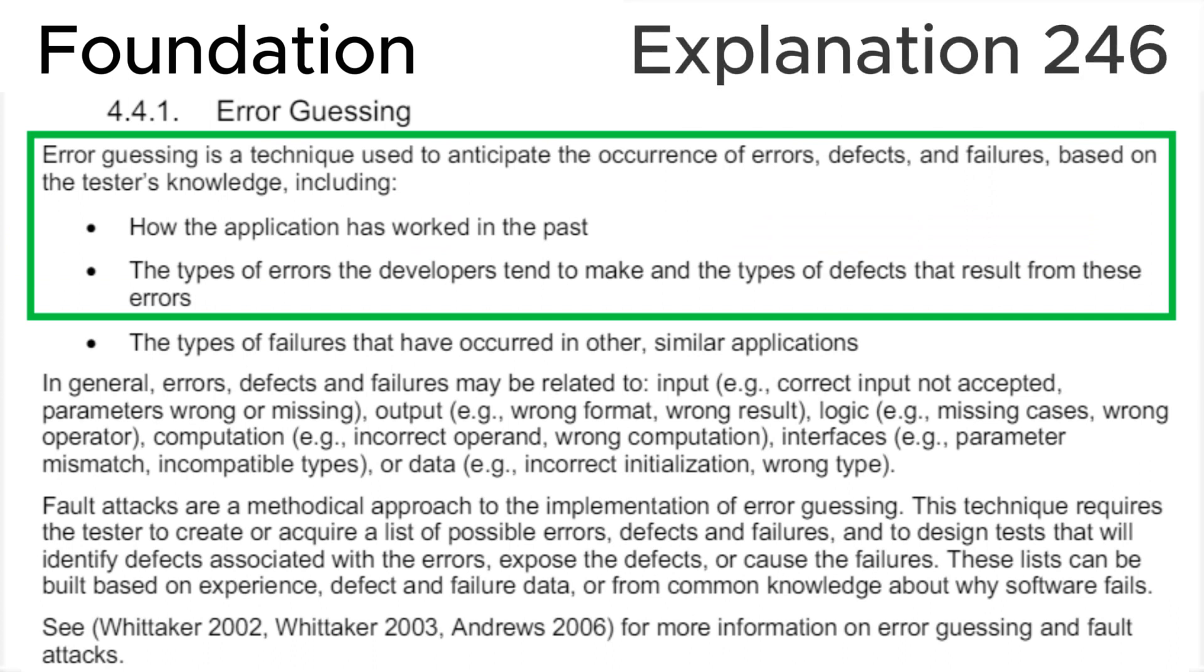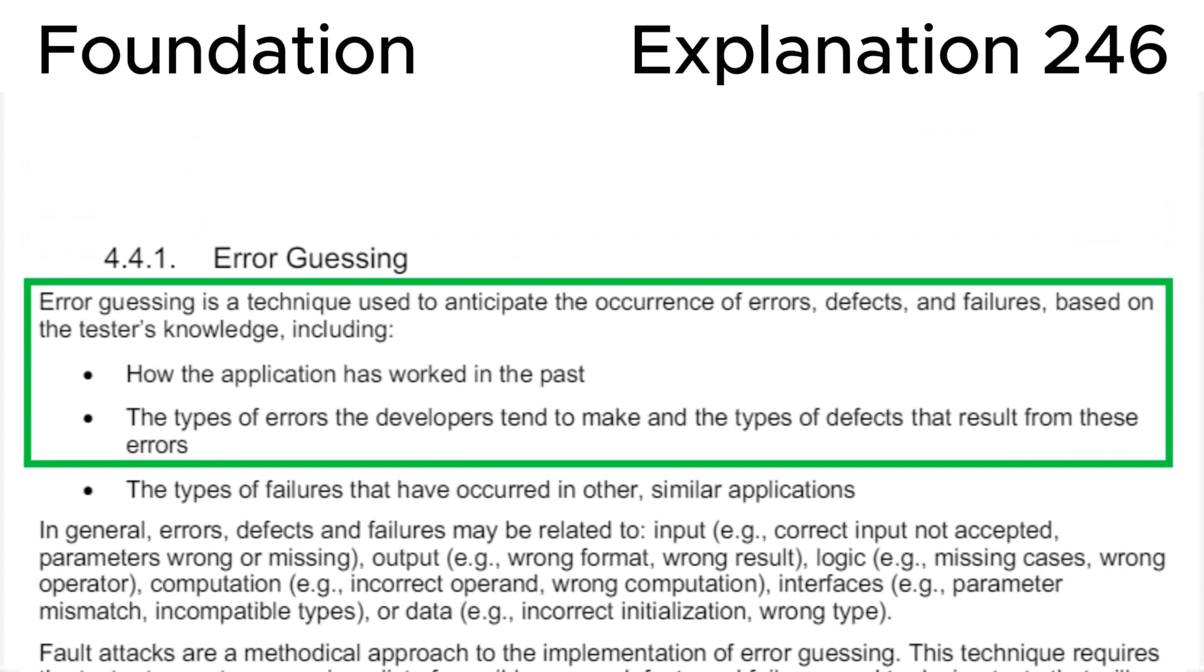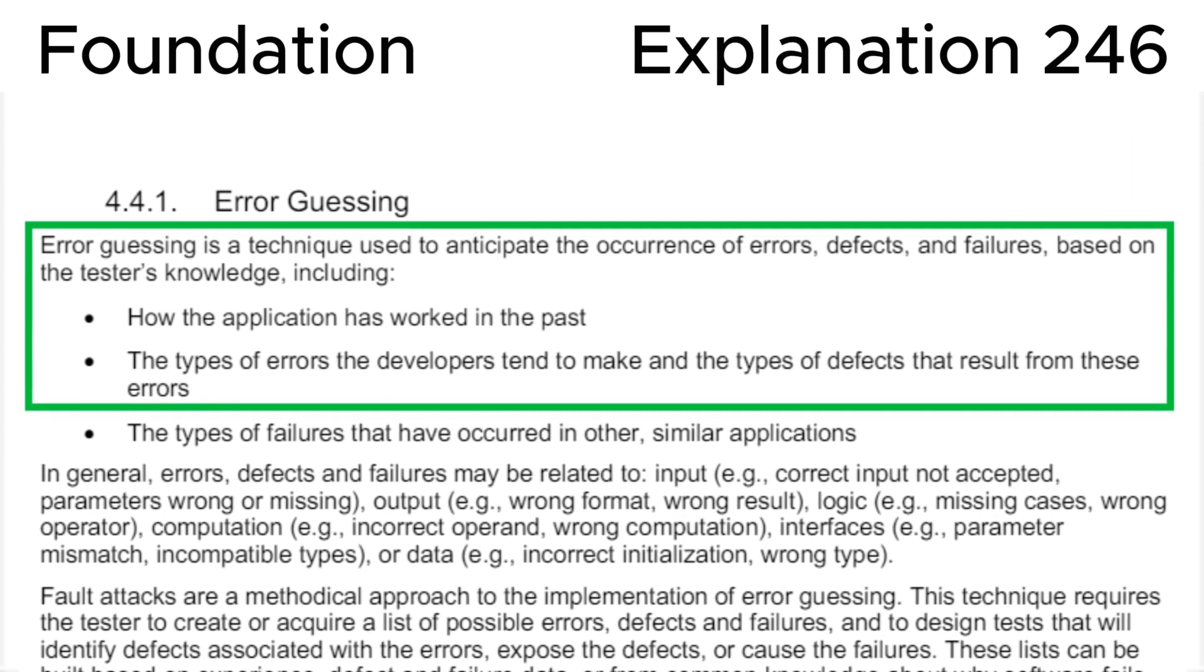Finally, let's look at section 4.4.1 Error Guessing in the ISTQB syllabus, where we can see that error guessing is a technique used to anticipate the occurrence of errors, defects, and failures based on the tester's knowledge, including how the application has worked in the past, the types of errors the developers tend to make, and the types of defects that result from these errors. This is fully consistent with the correct answer A.